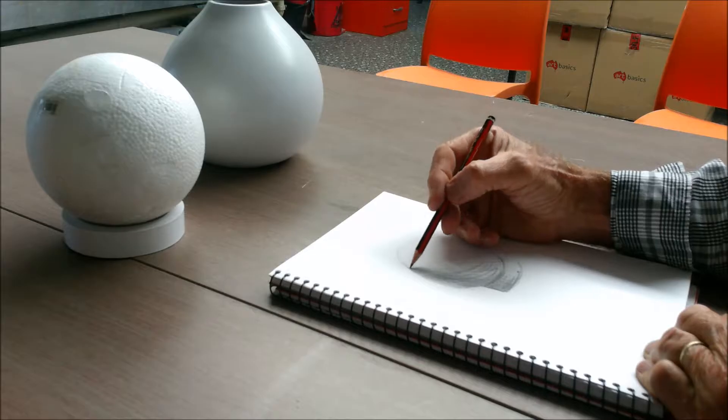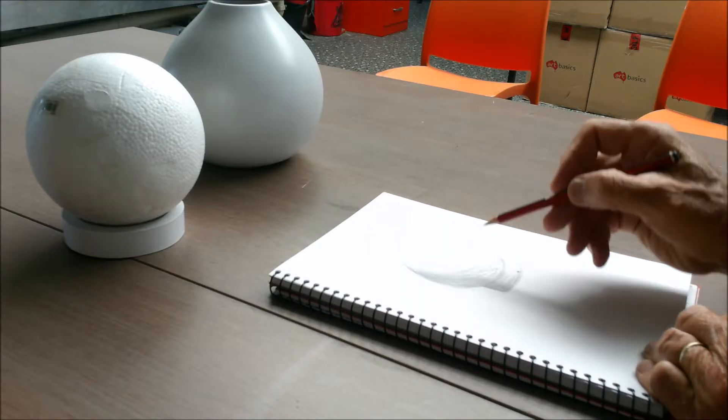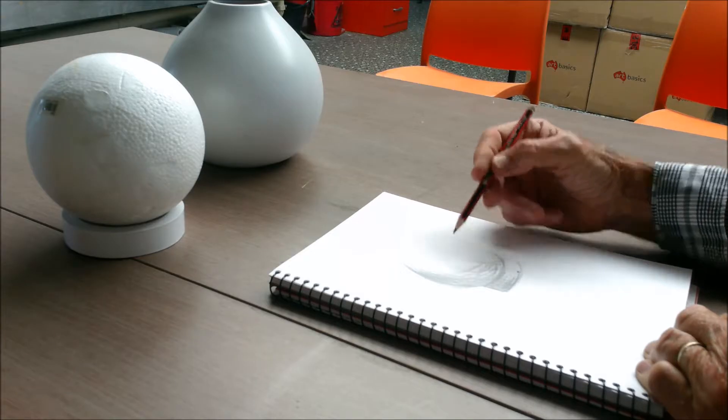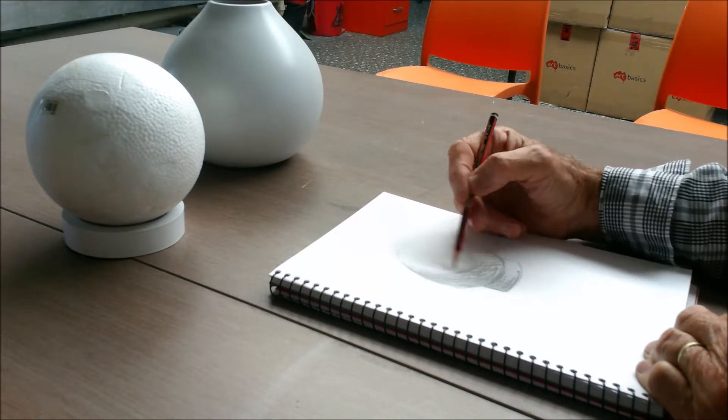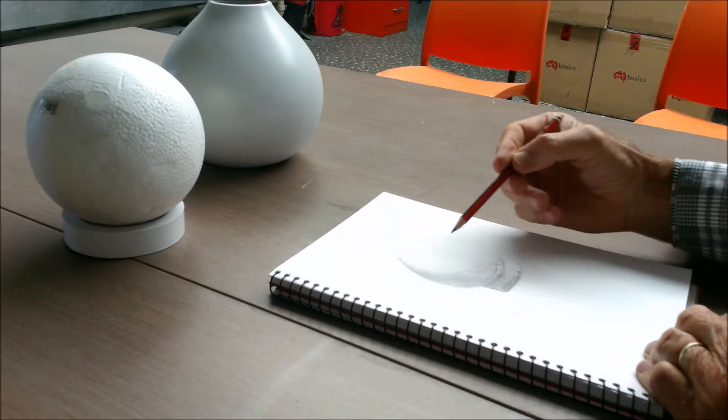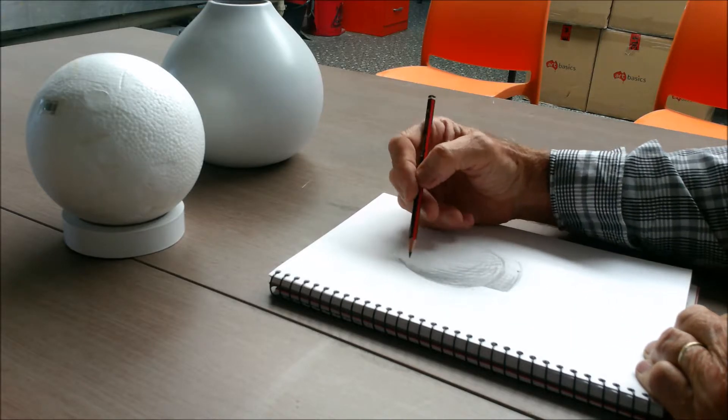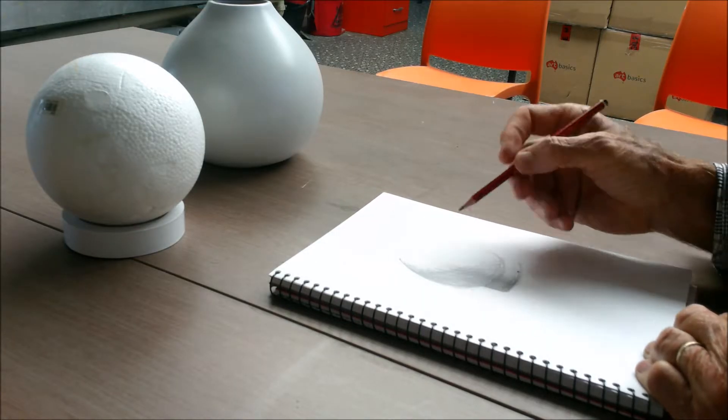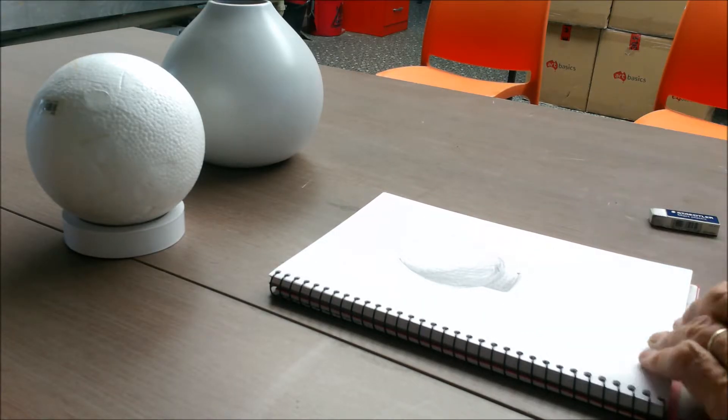Here I'm using the cross-hatching technique, going around the forms with the pencil to show the contour. Then I'm putting the pencil on its side to transition to the blending technique.